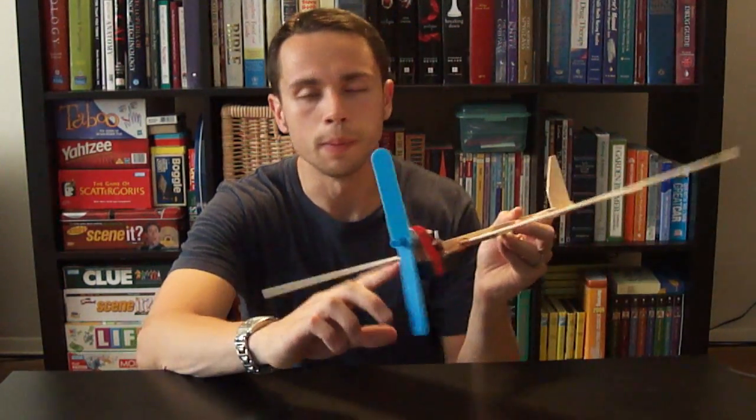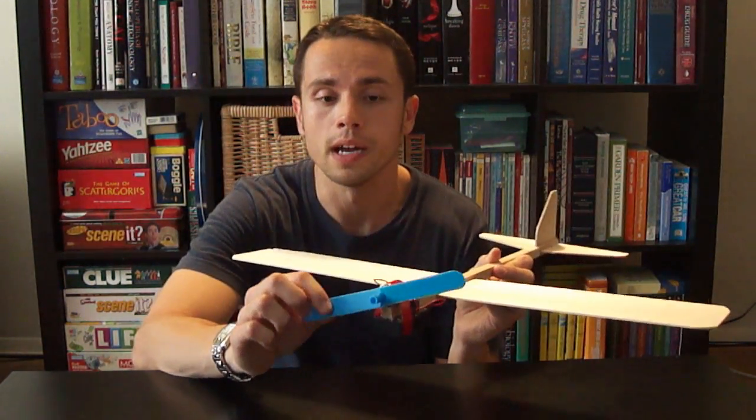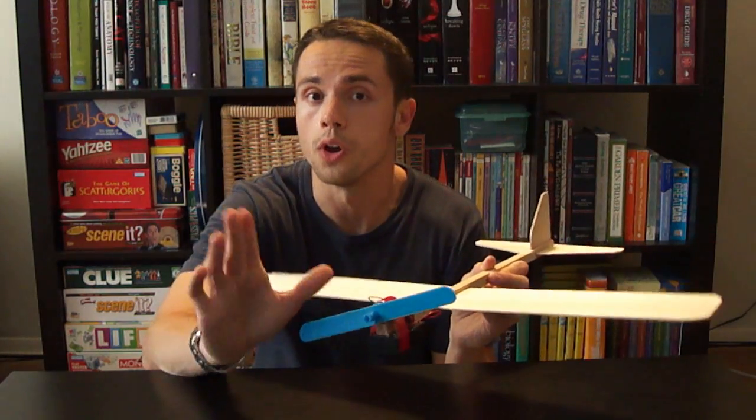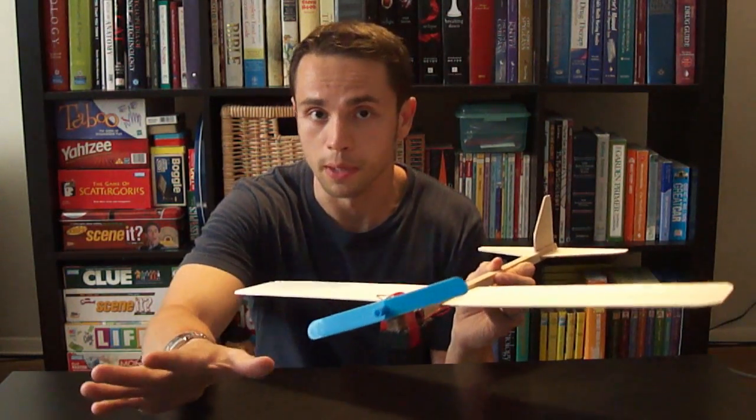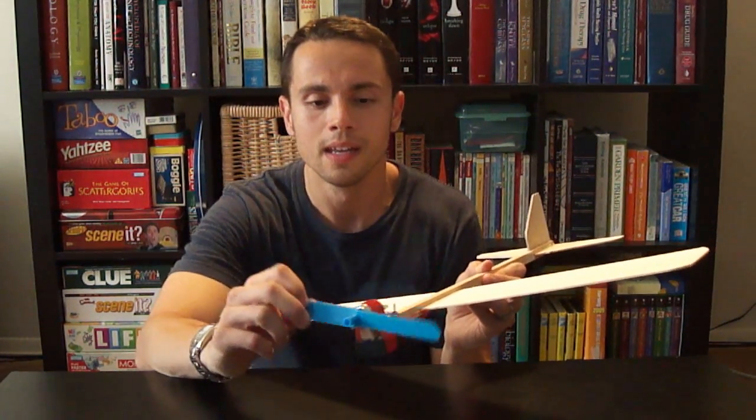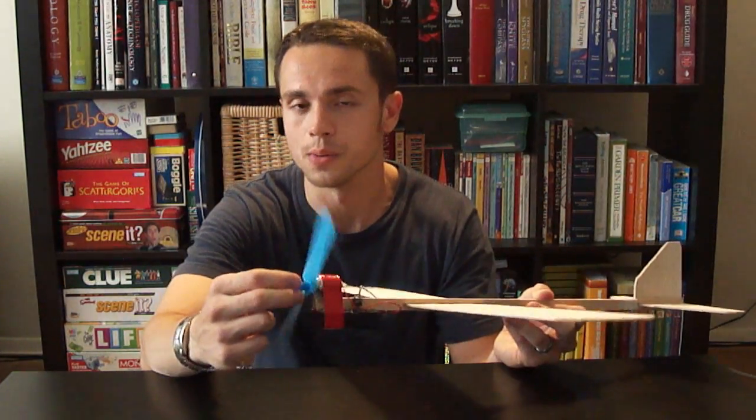You'll also notice that this is a blue propeller. In the tutorial I show how to put the plane together with an orange propeller. I broke that propeller when I was outside playing with it before I could show you the final product. That's why these are different colors.